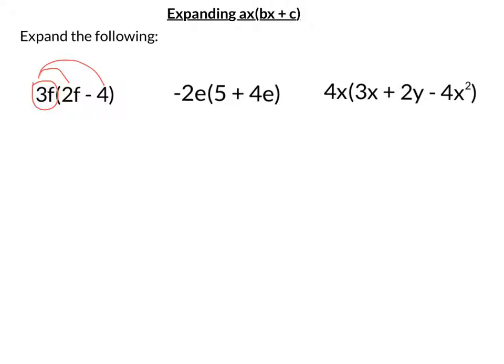So for this first one, we've got 2f multiplied by 3f, take away 4 multiplied by 3f. So let's do some simplifying. 2f times 3f, so 2 times 3 is 6. f times f is f squared. And on the next bit, we've got 4 times 3f, so that's 12f. So there's my answer.